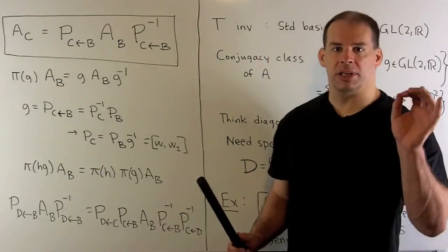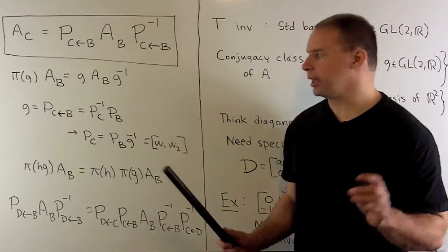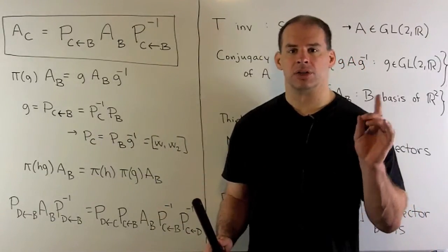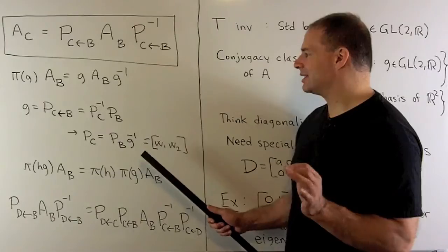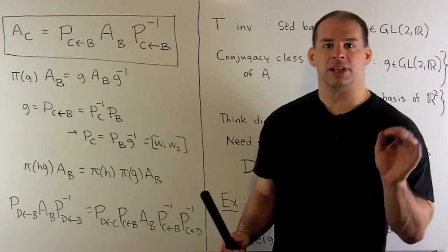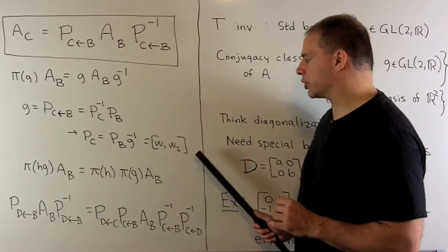So we set up our change of basis matrix going from B to C. That's equal to P_C inverse times P_B. Then I just isolate P_C. So we'll get P_B times G inverse. Then, to get our basis C, we just take the columns from that matrix.